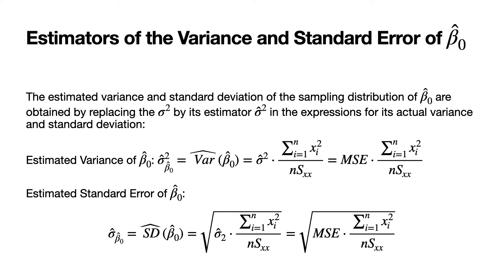As before, the estimated variance and standard deviation of the sampling distribution of beta 0 hat are obtained by replacing sigma squared with its estimator sigma hat squared. The estimated variance of beta 0 hat — denoted sigma hat squared sub beta 0 hat, or var hat of beta 0 hat — is given by sigma hat squared times the sum of the squared x values divided by n times S sub xx, which equals the mean squared error times the uncorrected sum of squares of the x's divided by n times S sub xx.